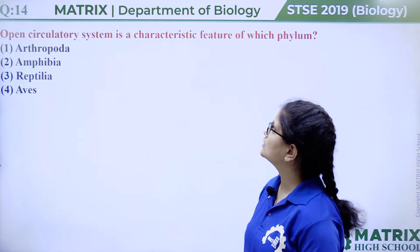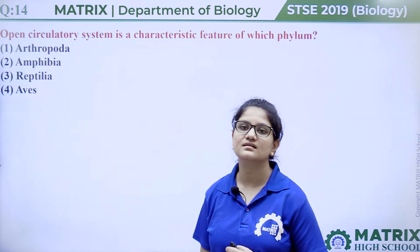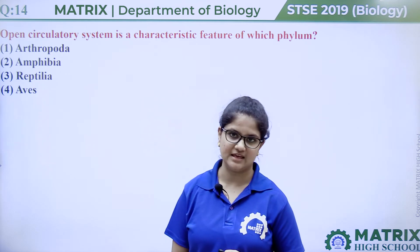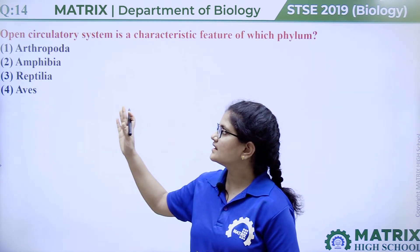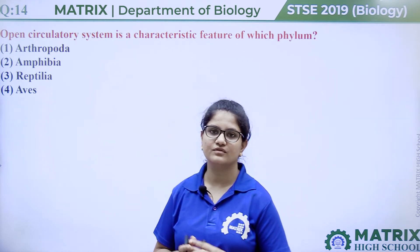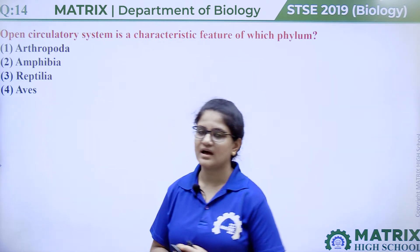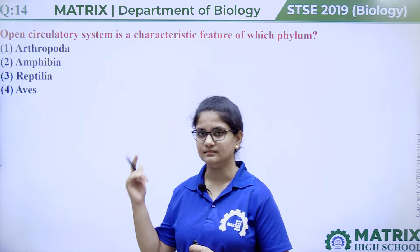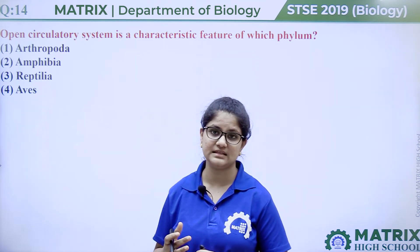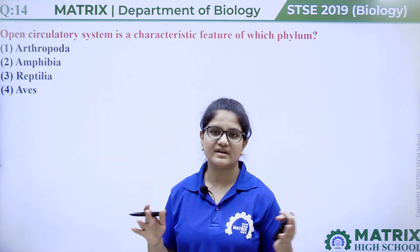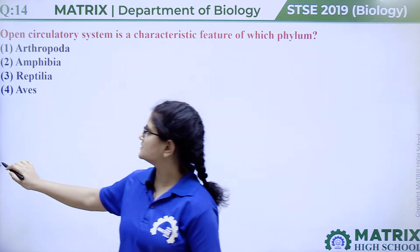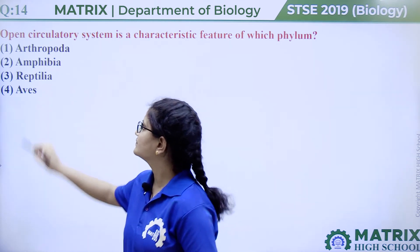Question number fourteen: open circulatory system is a characteristic feature of which phylum? Options are Arthropoda, Amphibia, Reptilia, or Aves. Amphibia, Reptilia, and Aves are phyla of Chordata. Arthropoda is a non-chordate and it possesses an open circulatory system, meaning blood flows in open spaces without vessels. So the answer is option one, Arthropoda. The rest three options have a closed circulatory system.